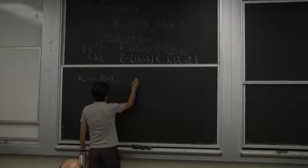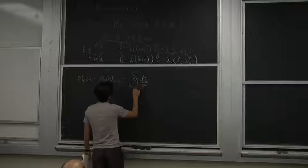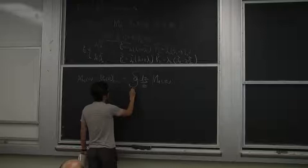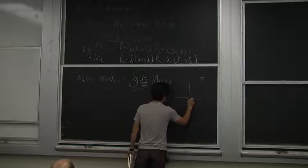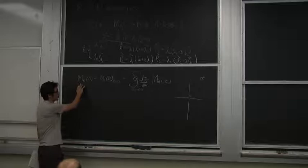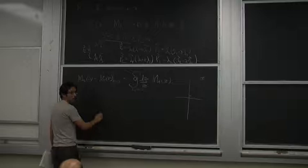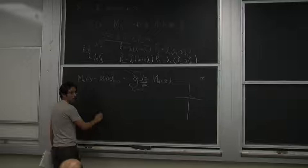Once we have this deformation, the real amplitude is just your deformed amplitude with Z set to zero. This can be rewritten as a contour integral: (1/2πi) ∮ dZ/Z · M_N(Z), where the contour C encircles Z equals zero. So my original amplitude, the undeformed one, is just related to this integral.